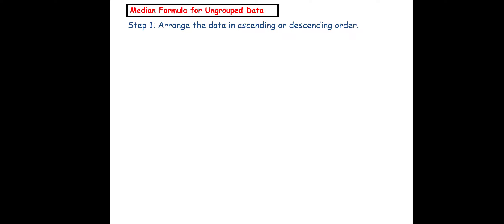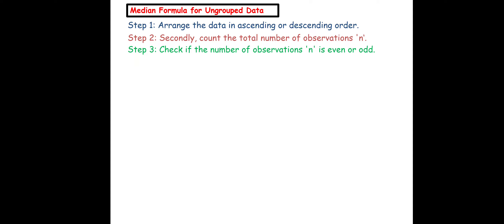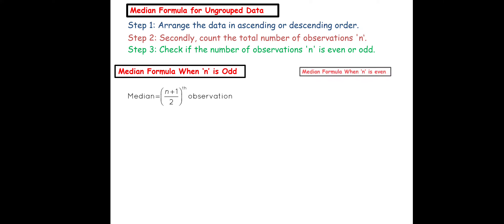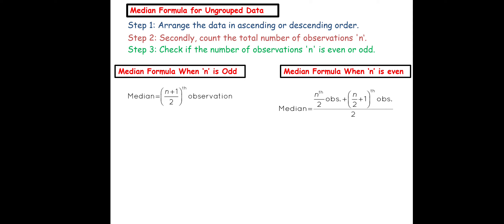Let's check out the median formula for ungrouped data. First, we need to arrange the data in ascending or descending order. Second, count the total number of observations, that is n. Then check whether n is even or odd. If n is odd, use the first formula; if n is even, use the second formula.